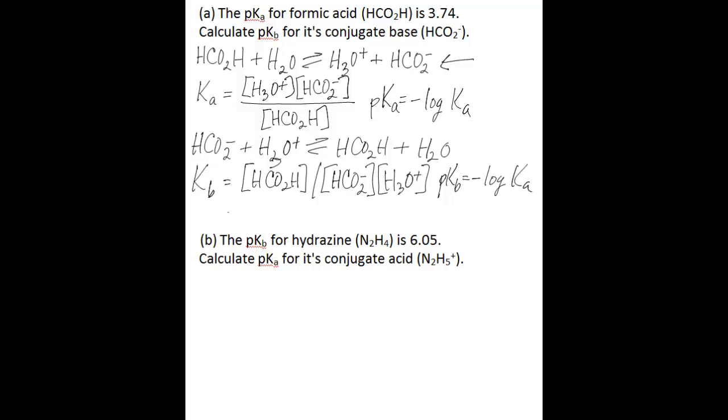So all you need to do in this case is subtract from 14.00 the 3.74 value that you're given for the pKa of formic acid, and you'll be left with 10.26 as the pKb. So that's the first part of the problem.